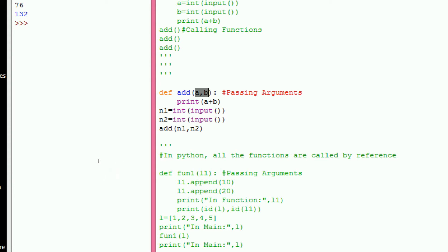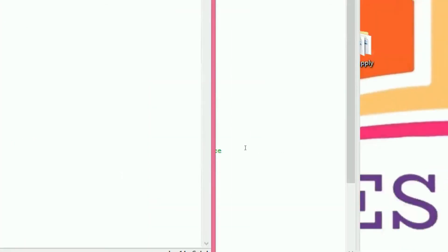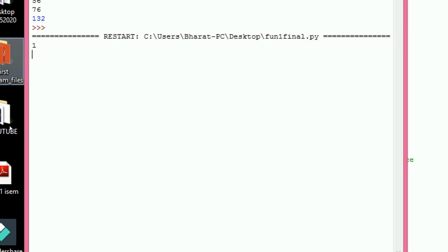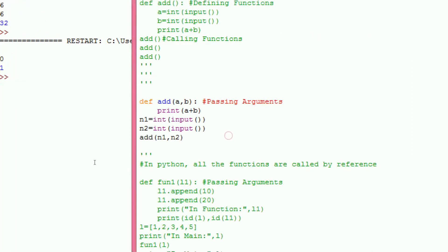With arguments. This is the function with arguments. In the previous example there is no arguments, you directly call the function add. Here I call the function with arguments. In the function we are going to pass the values N1 and N2. And we can see the execution. 10 and 20, 21.